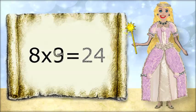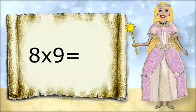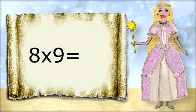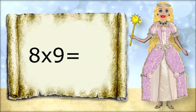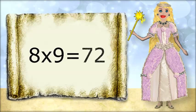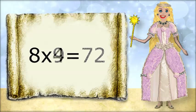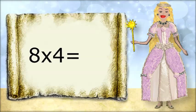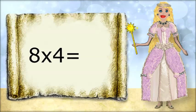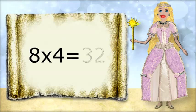8 times 9 equals 72. 8 times 4 equals 32.